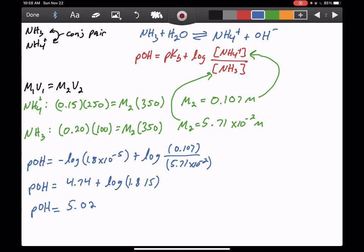Now the problem didn't ask for POH, it asked for pH. So we do have to recognize that for a conjugate pair, pH plus POH is equal to 14. And so, or for any solution, those two things are equal to 14. So I can write my pH is equal to 14 minus 5.02, which gives me 8.98.